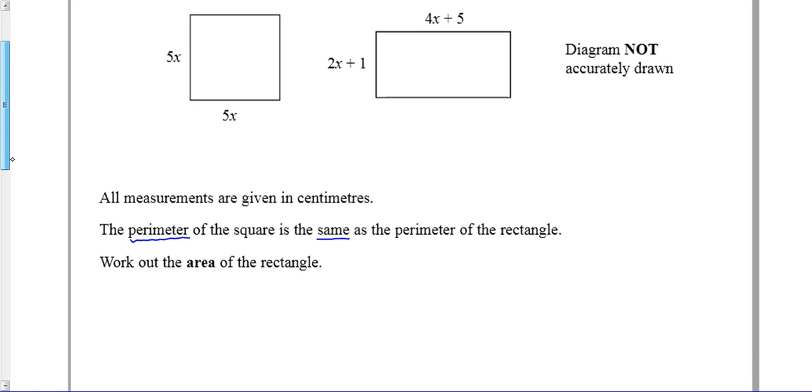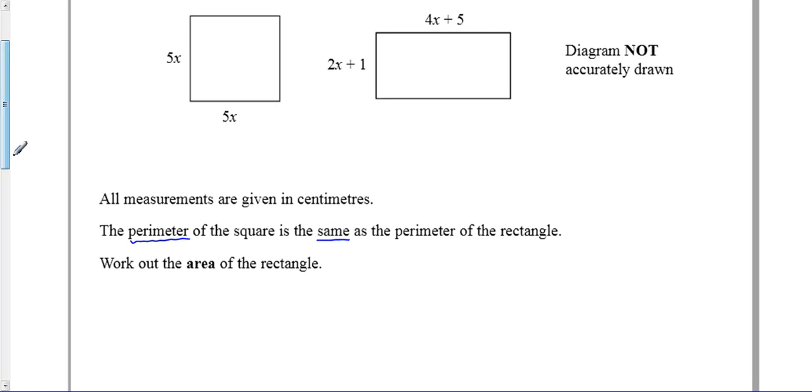For the square, we know that's 5x up there and 5x on the other side. The opposite sides are the same, so the perimeter of the square equals 5x plus 5x plus 5x plus 5x, which is 20x.